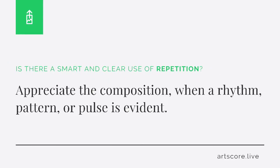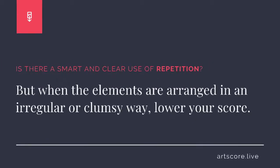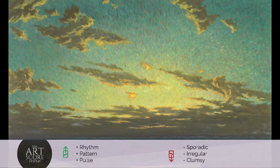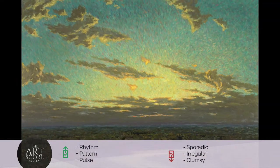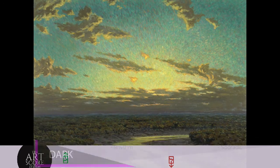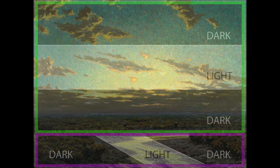Repetition. Is there a smart and clear use of repetition? Appreciate the composition when a rhythm, pattern, or pulse is evident. But when the elements are arranged in an irregular or clumsy way, lower your score. I scored the work a 6. I feel the elements do repeat.